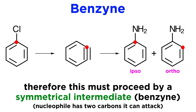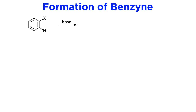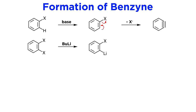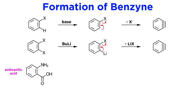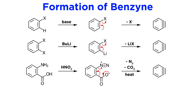So let's first examine methods of producing arynes. We have already learned one, where a halobenzene is treated with a strong, poorly nucleophilic base, resulting in carbanion formation and subsequent beta elimination. Another method involves a dihalobenzene which can be monometallated using something like n-butyllithium. Elimination can then occur just as we've seen, in this case producing the lithium halide. For another method, we can start with a compound called anthranilic acid, which can be treated with nitrous acid and then diazotized and decarboxylated to again produce benzyne.